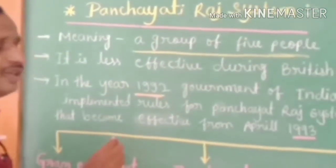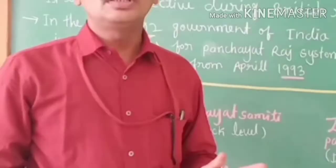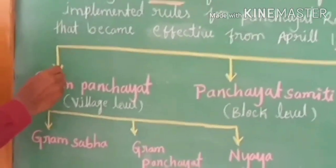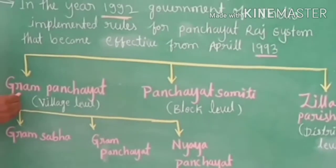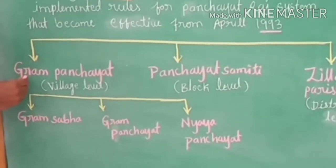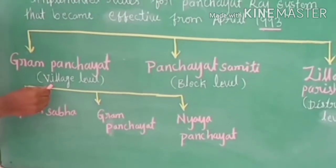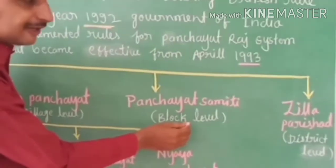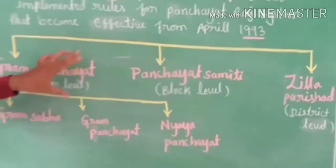The Panchayati Raj system is a three-step system. It includes three steps: the first is Gram Panchayat at village level, the second is Panchayat Samiti at block level, and the third is Zilla Panchayat at district level. These are the three main steps of the Panchayati Raj system.